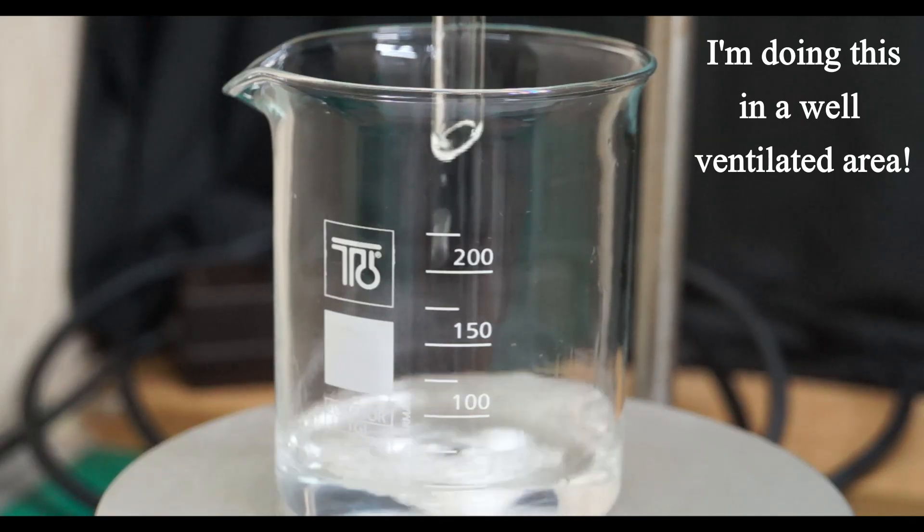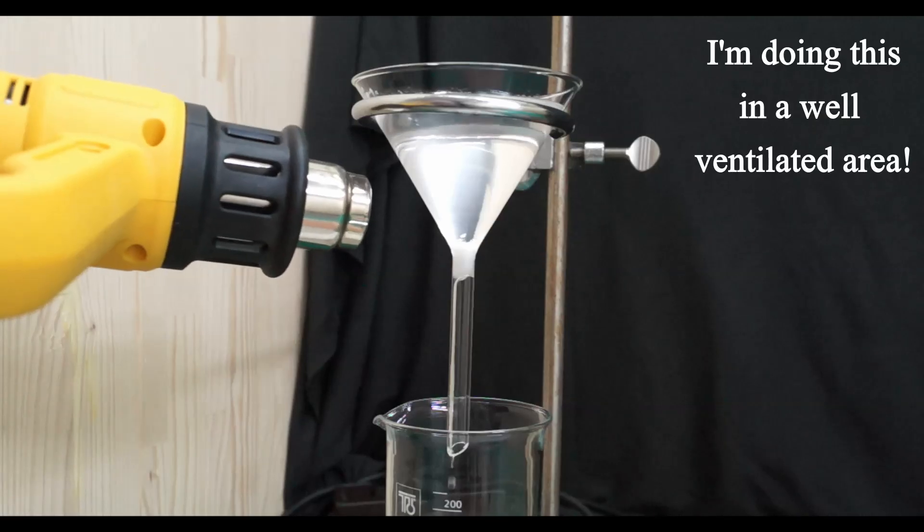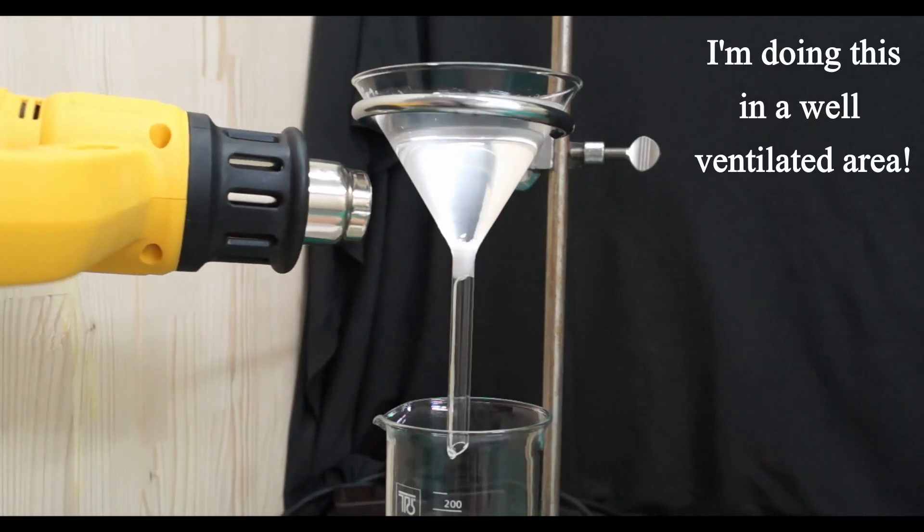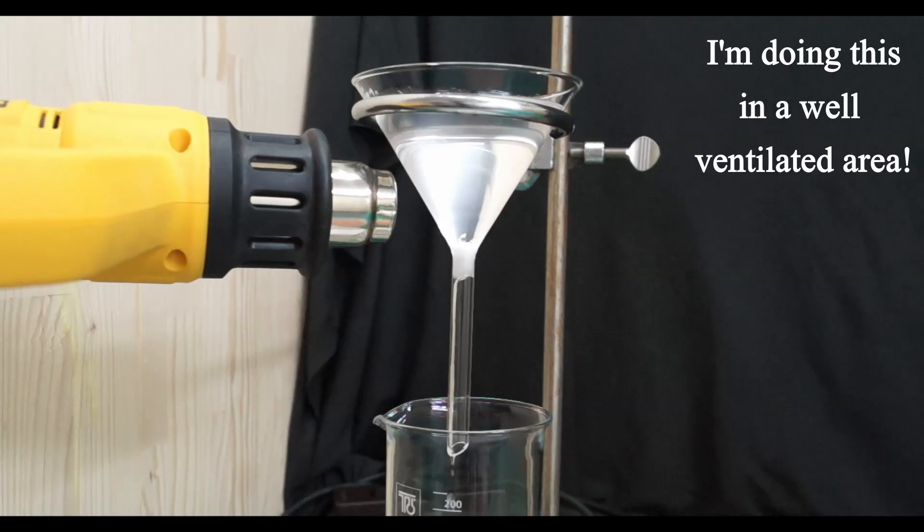So I decided to filter the hot solution again, this time through a small amount of cotton packed in a funnel and because this was going to be a slow process I also decided to start evaporating the acetone at the same time. During the filtration I used the heat gun to keep the solution hot and prevented the paracetamol from crystallizing in the funnel.